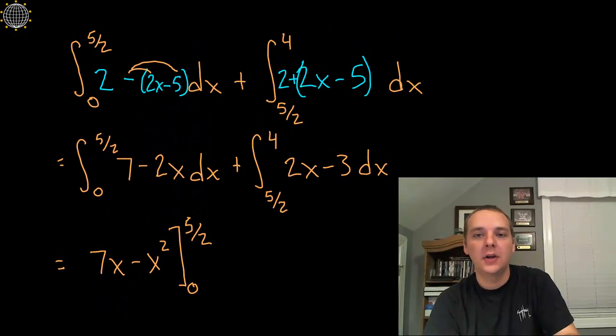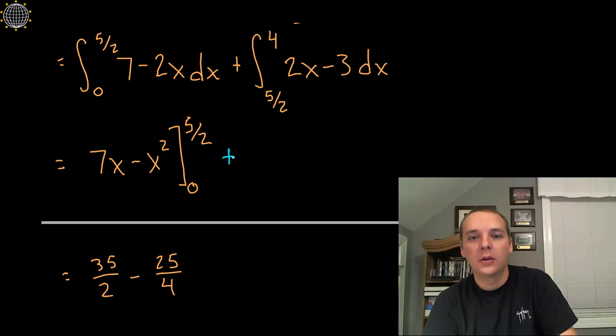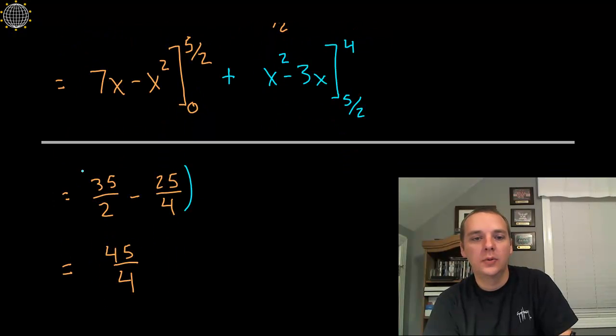Okay, I'll change colors for the second example here. I still have to do the second integral. Okay, integrate 2x minus 3, we get x squared minus 3x, bracket from 5 halves up to 4. We'll group those.